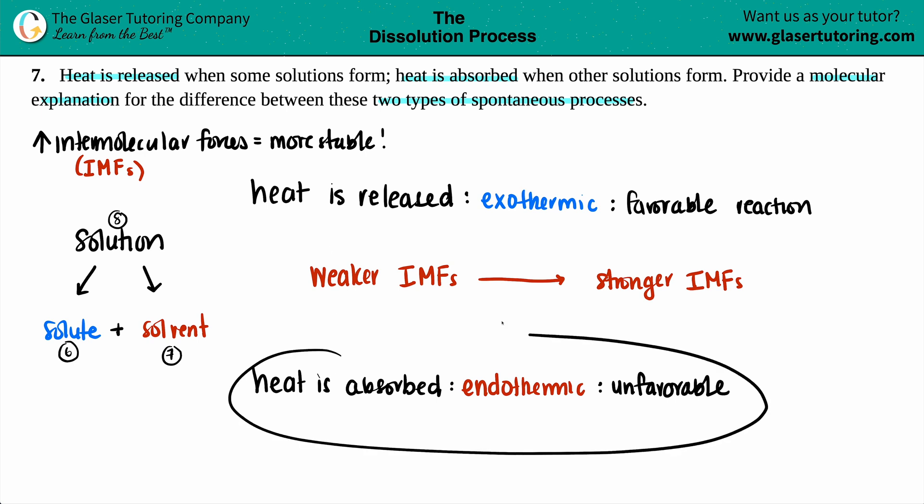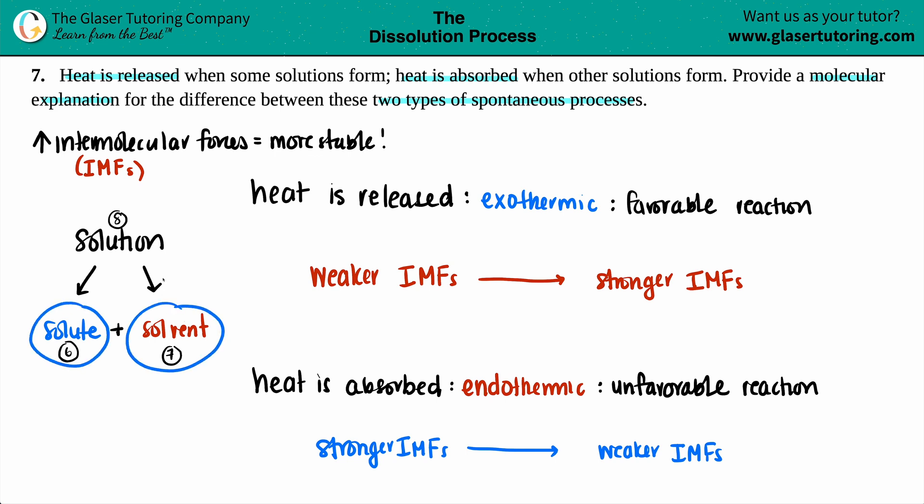On the flip side, if we talk about heat was absorbed or an endothermic reaction, which is an unfavorable reaction, we're basically going the opposite way, where we had stronger intermolecular forces in the beginning. We broke them up and we formed weaker intermolecular forces. And that means that when we took that solute and came in with the solvent and made the solution, the solution has the weaker intermolecular forces. Because whenever you're talking about a solution, that always means that the solute and the solvent came together.